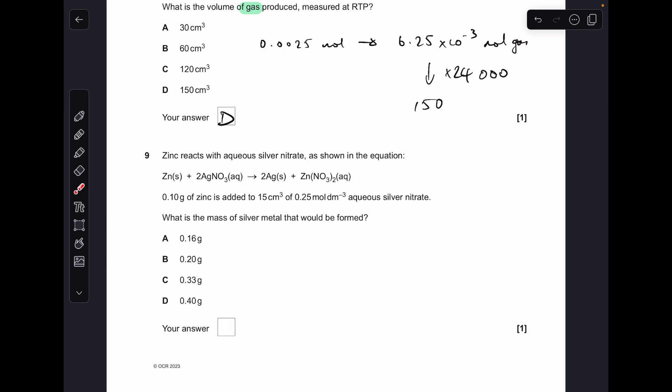Moving on, number nine. You'll notice we've got enough information to calculate the moles of each of those reactants, so we're going to have to do that to establish the limiting reagent. Mass over MR gives us the moles of zinc, 0.0015, and concentration times volume in decimeters cubed gives us the moles of silver nitrate. If we think about the mole ratio in the equation, if we want all of these moles of zinc to react we're going to need twice as many moles of silver nitrate, 0.003. Well we've definitely got enough of that, so all of zinc is going to react—it's the limiting reagent.